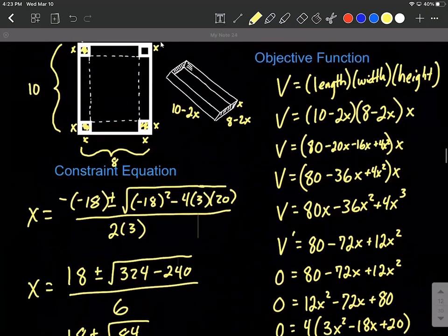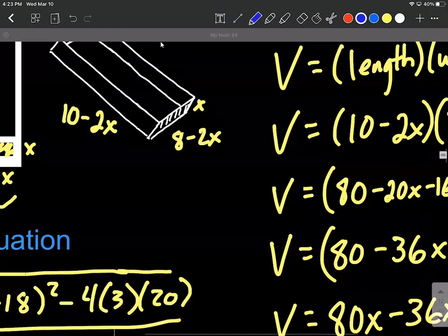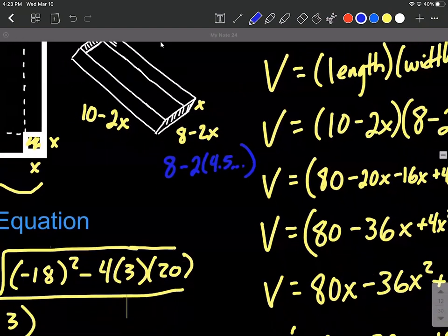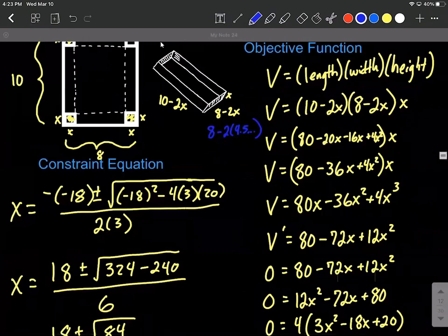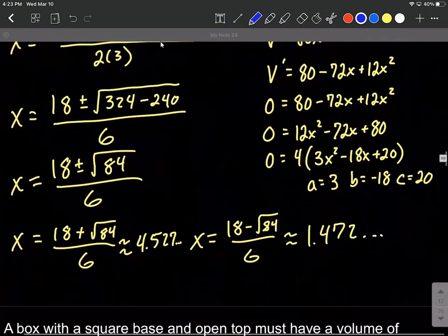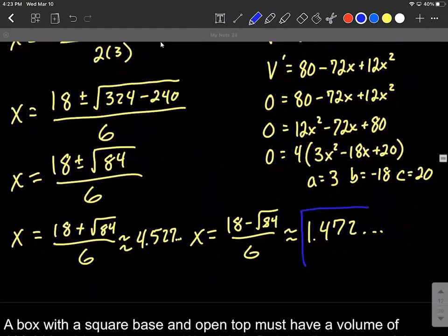Because remember, up here, if we did eight minus two times 4.5, that's going to turn out being a negative value. Meaning we've cut off more than the side length that we actually have. So that wouldn't work for creating an actual box. So our only solution in this case is going to be this 1.47 inches.